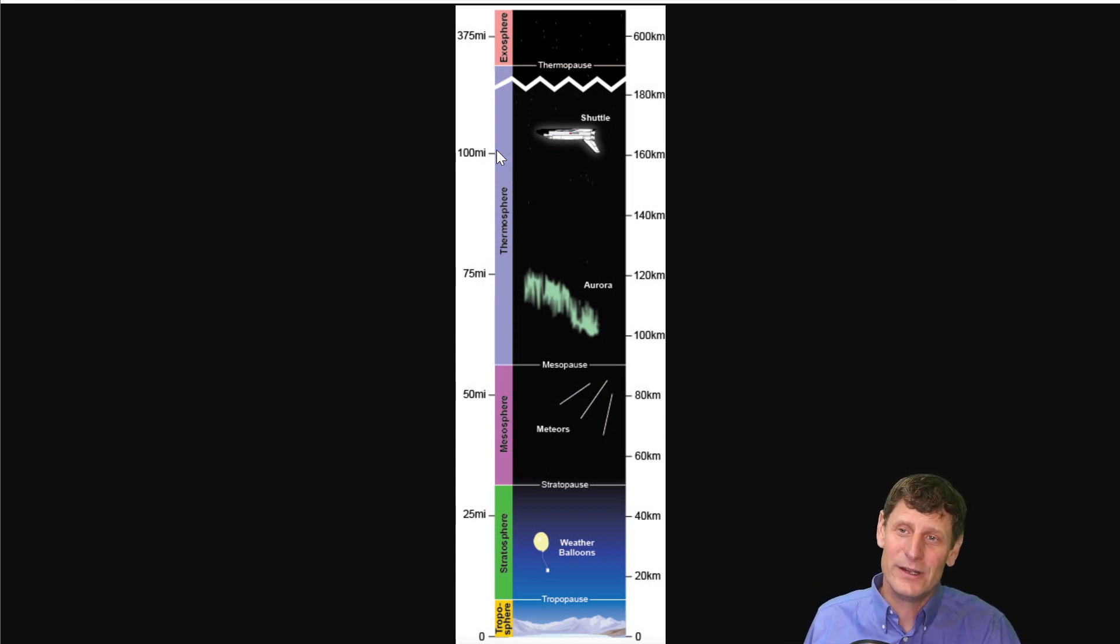Furthermore, if we look at the amount of air there is in the atmosphere, most of it is concentrated way down close to the surface. So that's another reason to think about the atmosphere as a very thin thing.